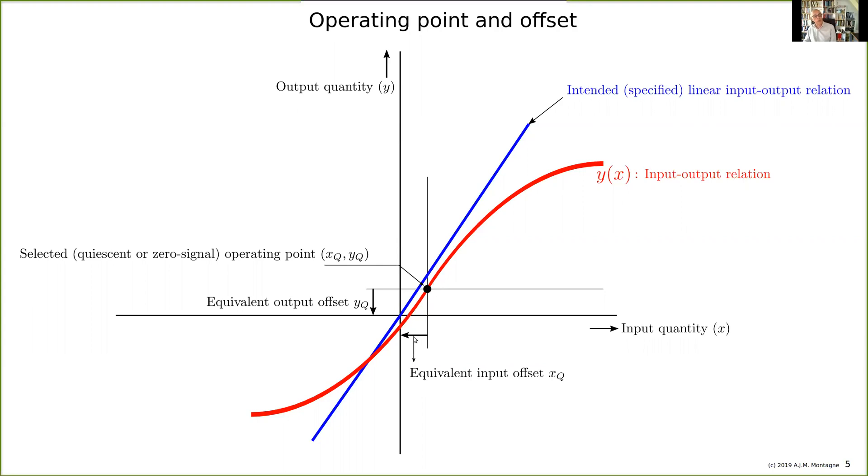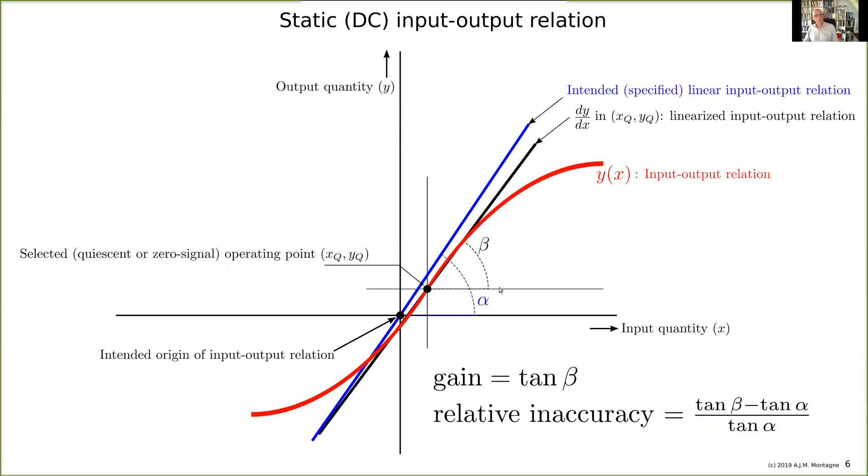The deviation from this to your blue thing is called the equivalent input offset and the equivalent output offset. The next thing is, in this operating point, is the gain equal to the gain of the blue one? We talk about the derivative—the tangent of beta and the tangent of alpha. Then the relative gain inaccuracy is defined as tangent of beta minus what you have, minus what you wanted to have, divided by what you wanted to have. That is the relative error—that's always how you define relative errors.